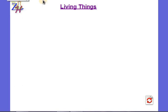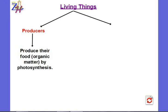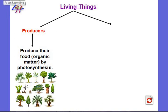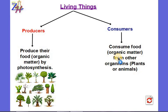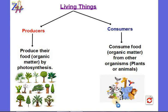We can classify living things into two groups. The first group is producers — those that produce their food or organic matter by photosynthesis, meaning all plants. The other group is consumers: animals that consume organic matter from other organisms, like plants or animals. All animals are consumers.